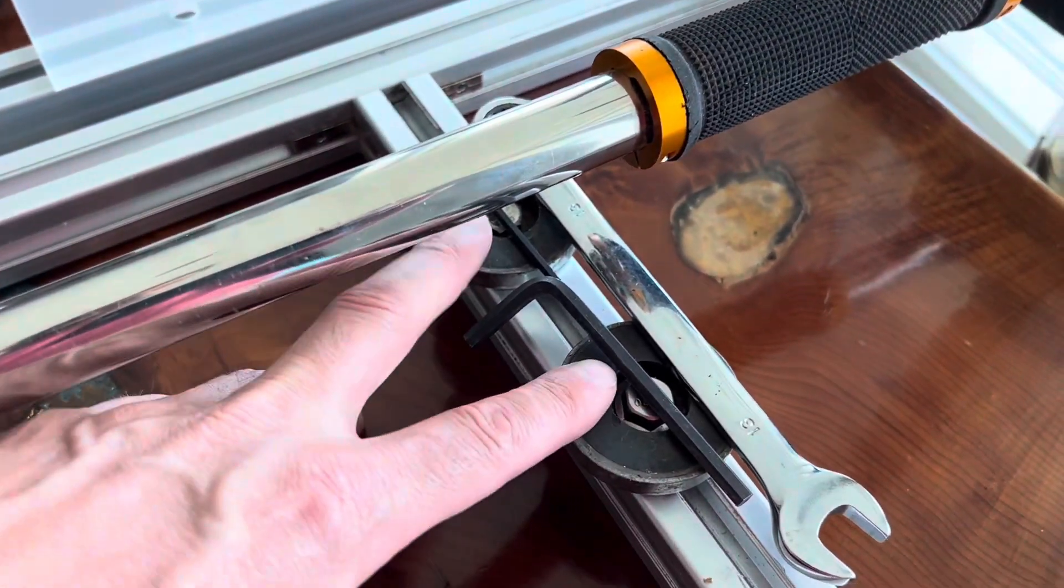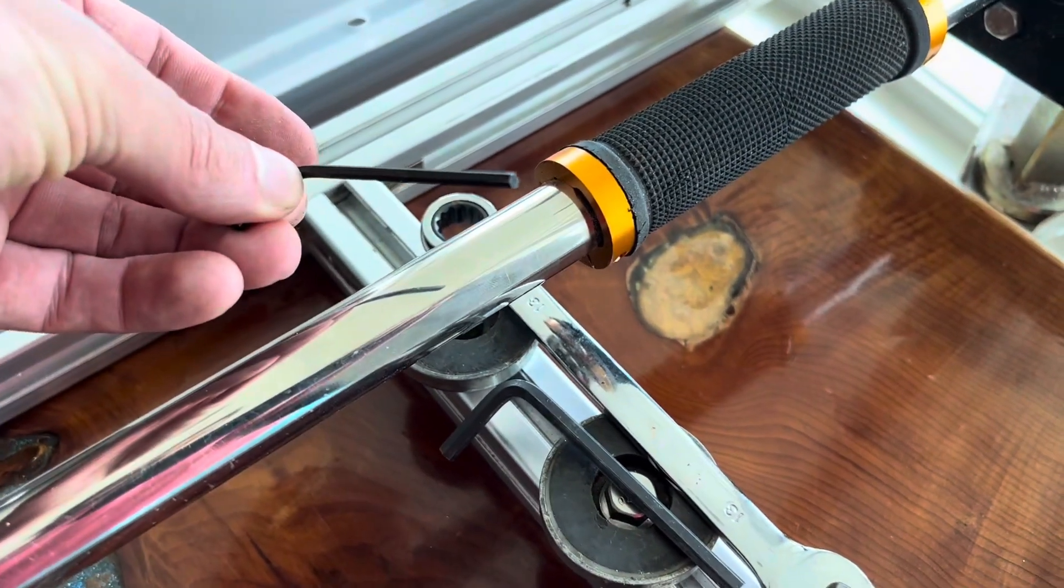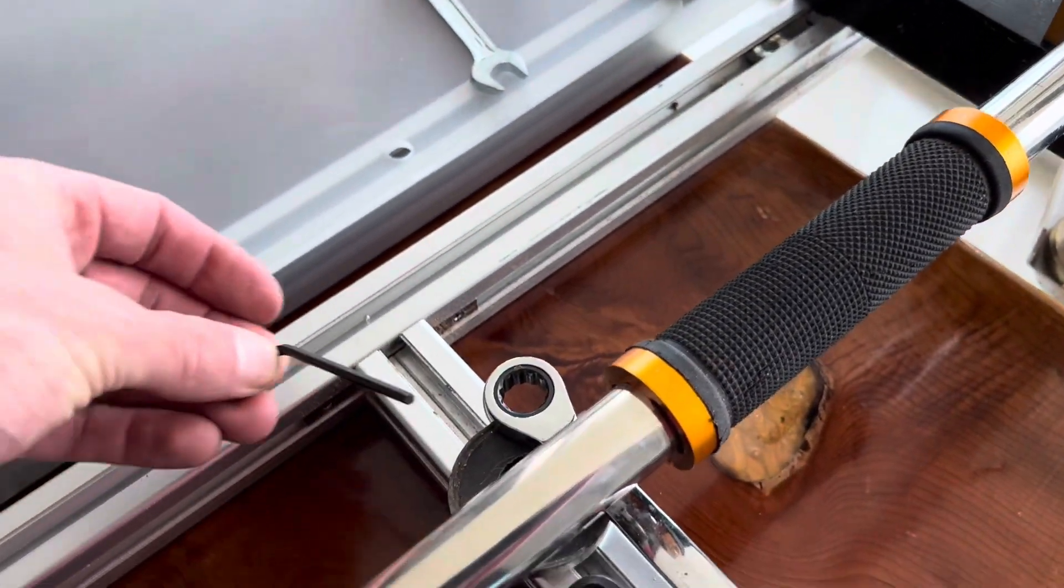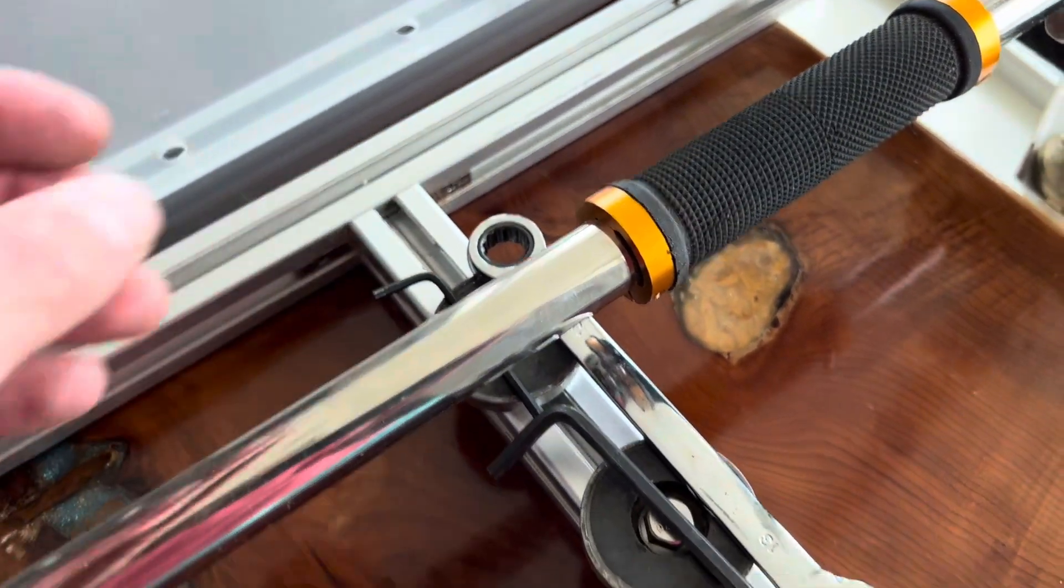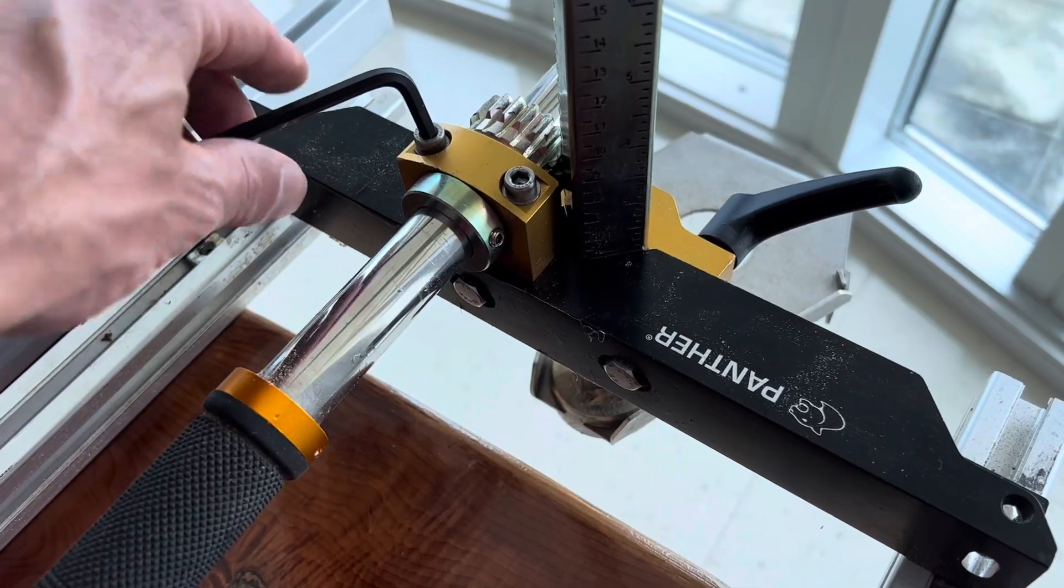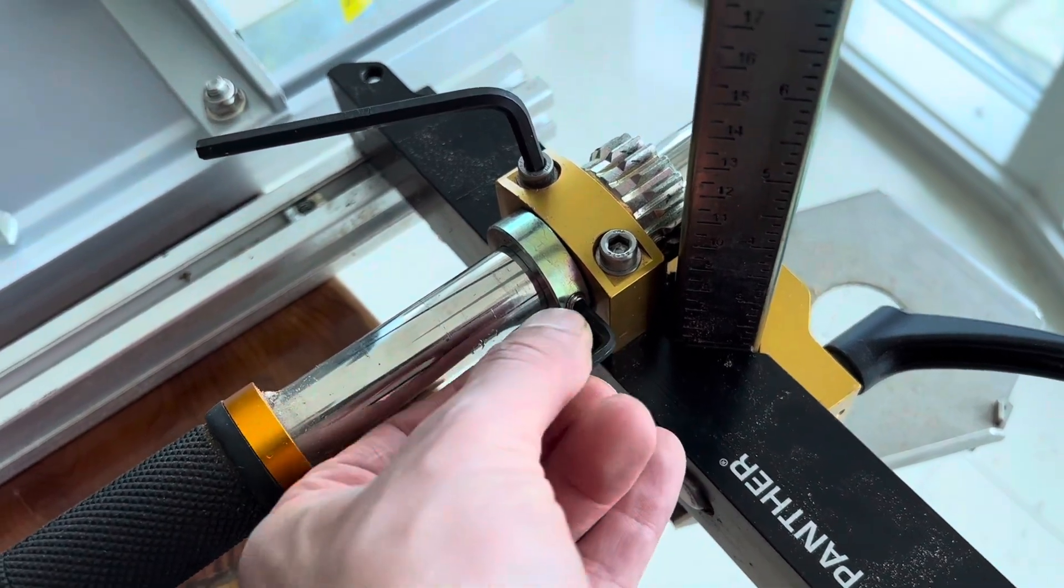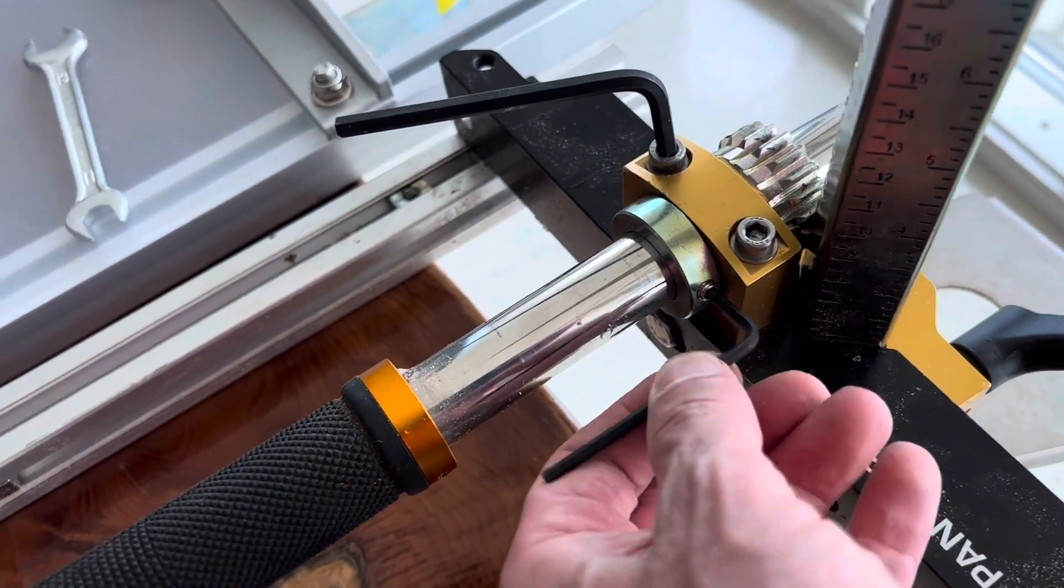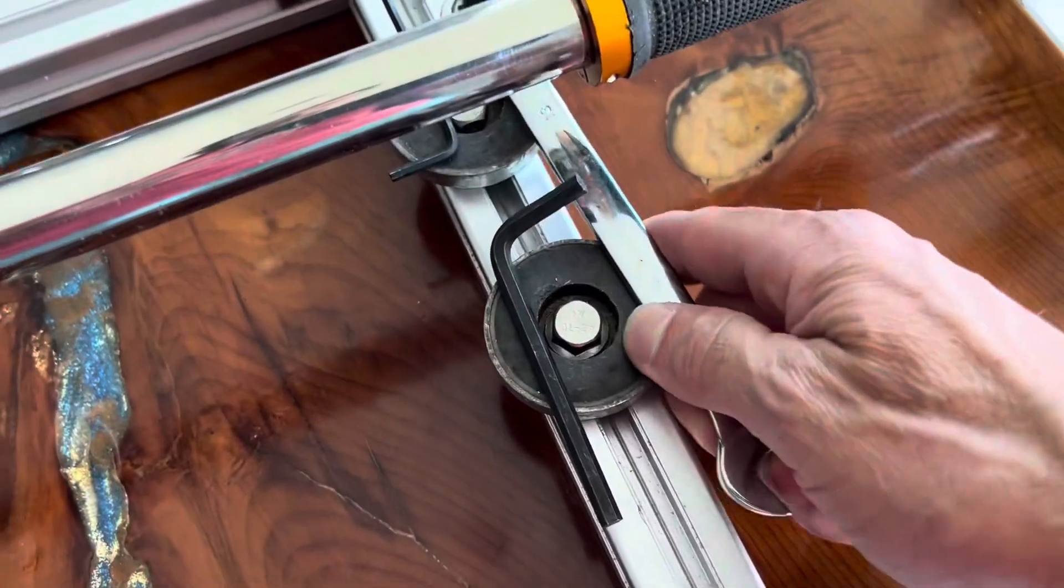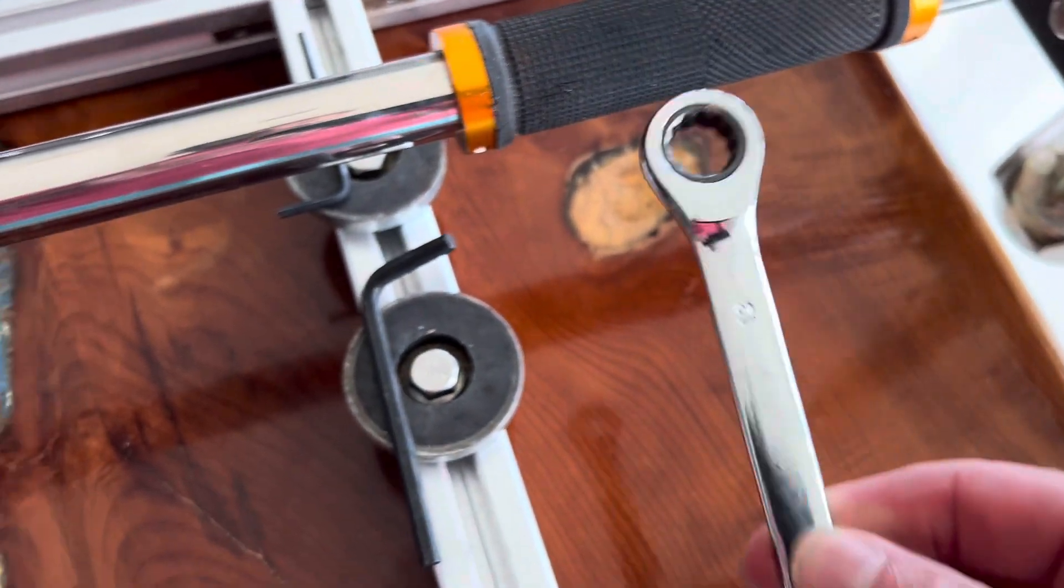With the Panther mill you automatically get the magnets there and that's to fit this little allen key which you often use to adjust this. You've got another allen key there to adjust those blocks, and then you can keep them close to hand. Then you get a 13mm ratchet spanner and that's for actually attaching the mill to the bar.